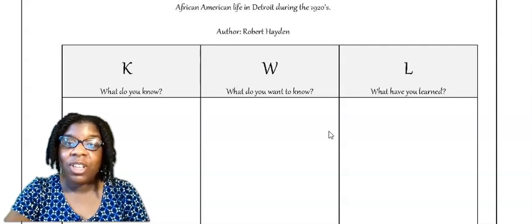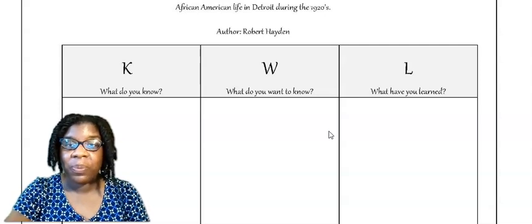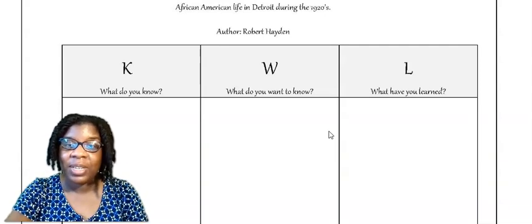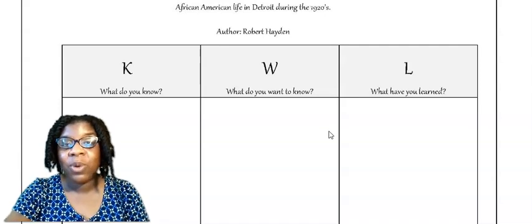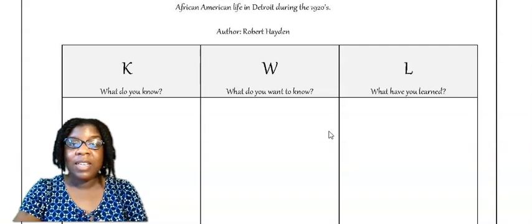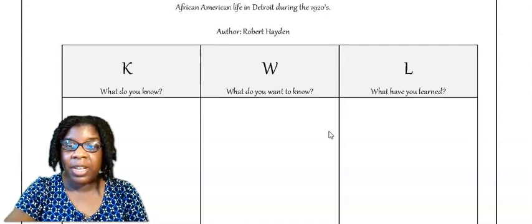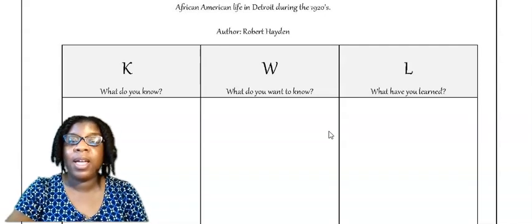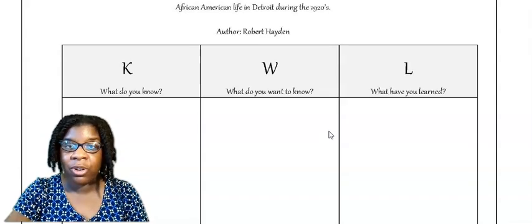In your W chart, it says, what do you want to know? In this column, you will write one thing you would like to know about African-American life in Detroit during the 1920s. Underneath that, write one thing you would like to know about the author, Robert Hayden. Leave the L column blank for now because it says, what have you learned? Midway through the lesson, we'll come back and revisit this KWL chart and you'll write two things that you've learned.